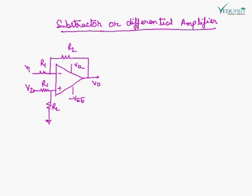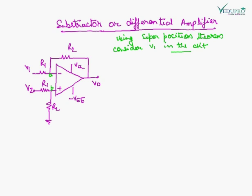This is the circuit diagram of a differential amplifier. The output will be the difference between the two inputs. To find out the output voltage, we will apply the superposition theorem. Keeping V1 in the circuit with no V2, when V1 is applied, the circuit becomes an inverting amplifier.